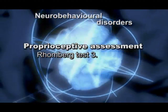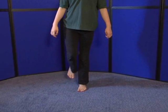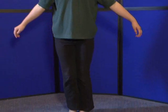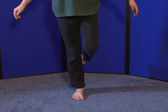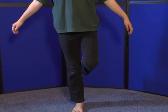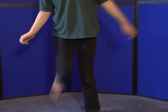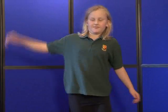Proprioceptive assessment — Romberg test number three. Patient standing with eyes open, asked to lift one leg and bend at the knee. Should be able to hold this position for 30 seconds. Repeat on the other leg. Then repeat both sides with eyes closed. A sway to one side usually indicates hemisphere weakness on the opposite side.